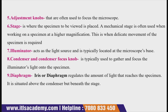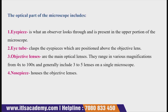The illuminator, as its name suggests, acts as a light source and is typically located at the microscope base. The condenser and condenser focus knob are used to gather and focus the illuminator light into the specimen. The diaphragm, also known as the iris, regulates the amount of light that reaches the specimen. It is situated above the condenser but beneath the stage.